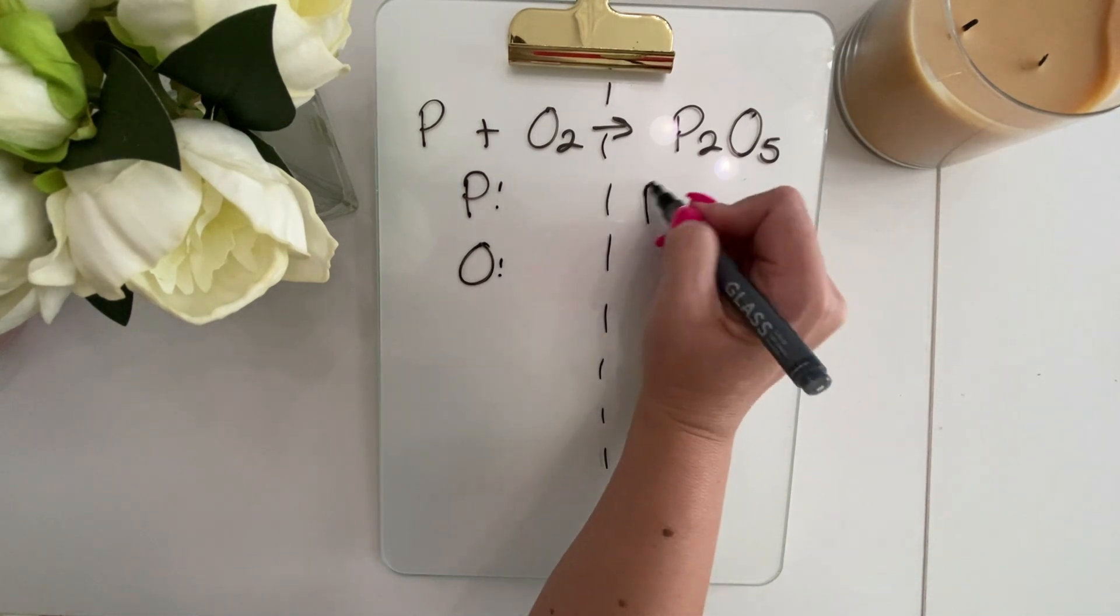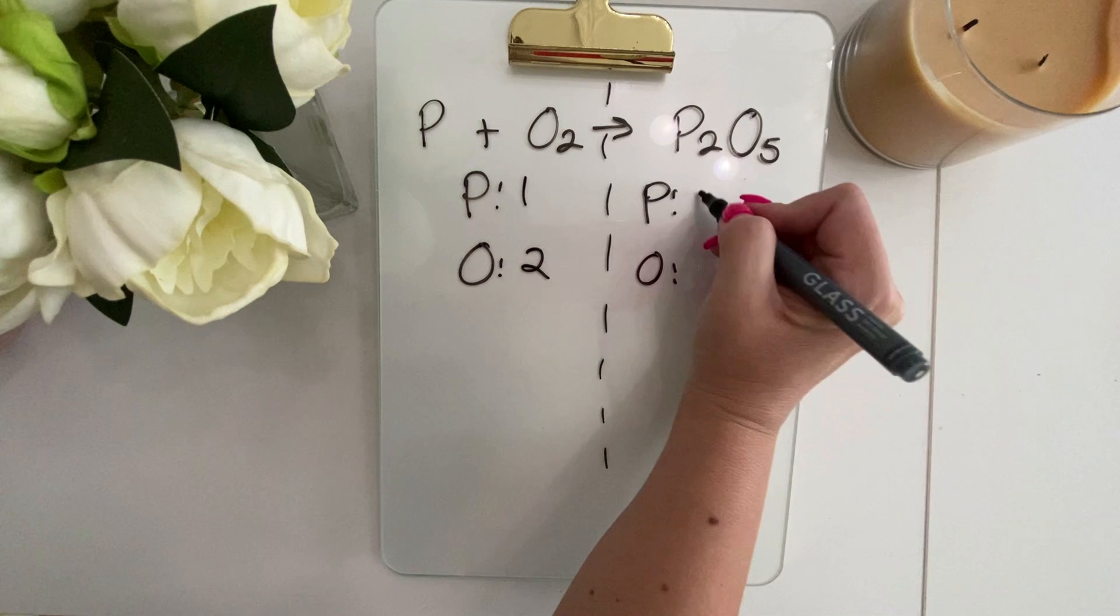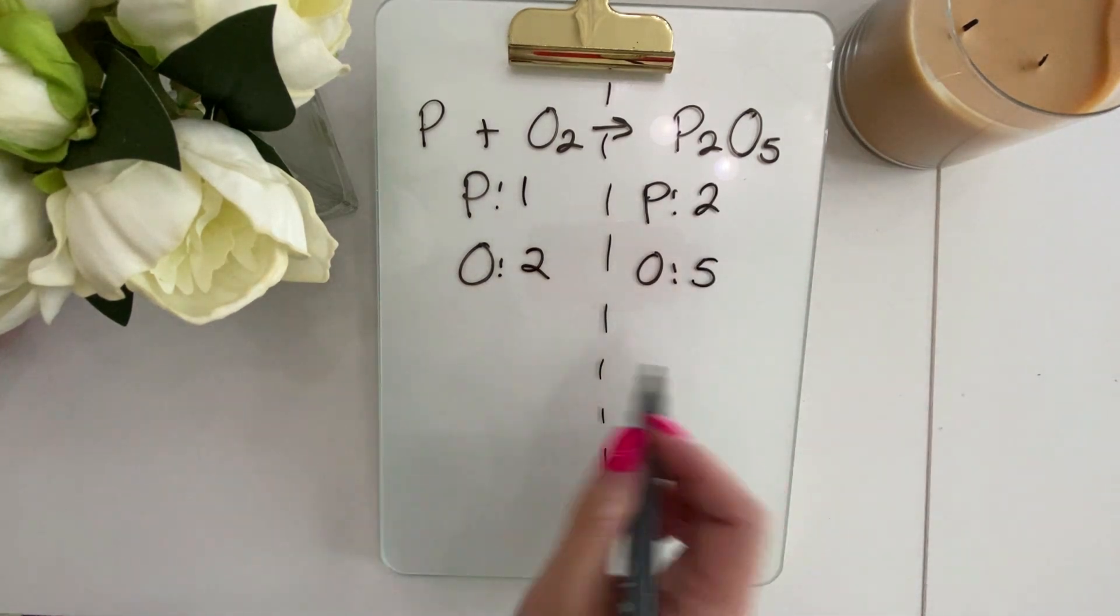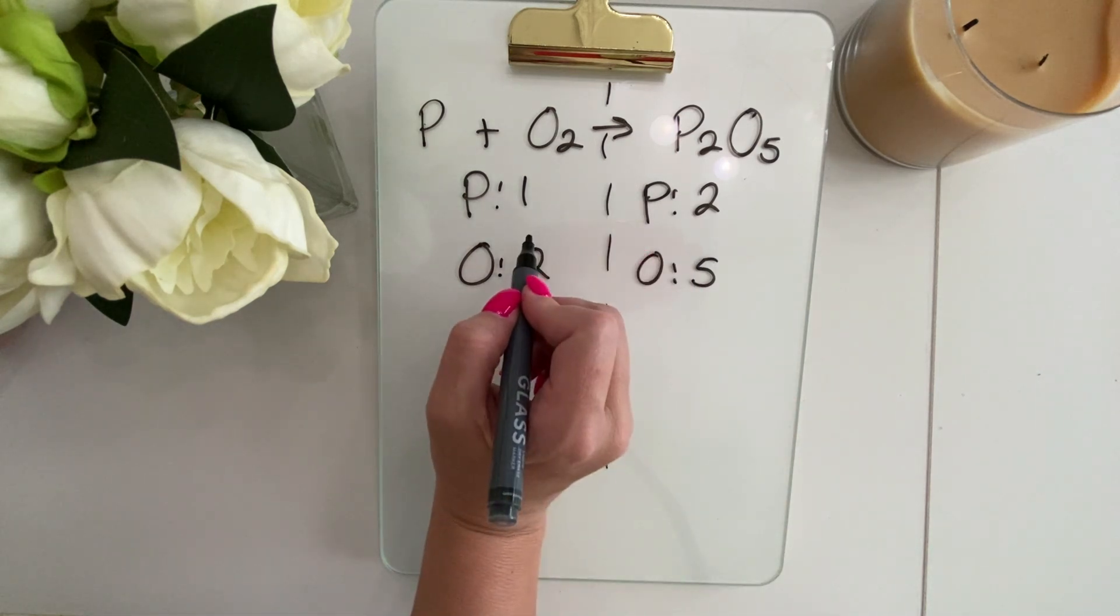We're going to list all elements on both sides of our equation and then count up our atoms. You can see that both of them are unbalanced. So let's start with our phosphorus.